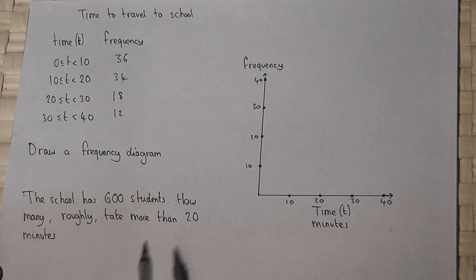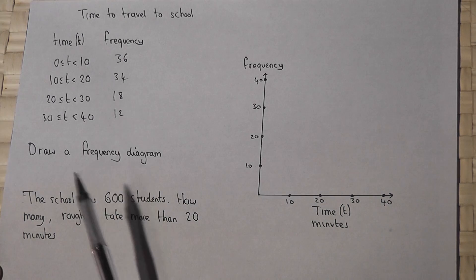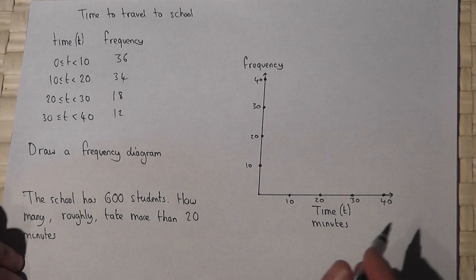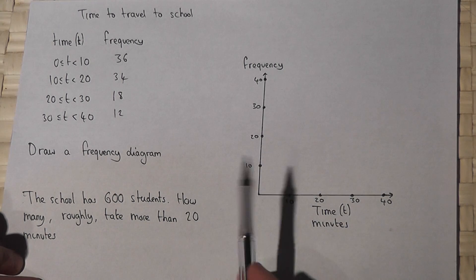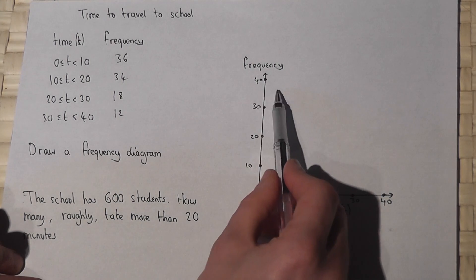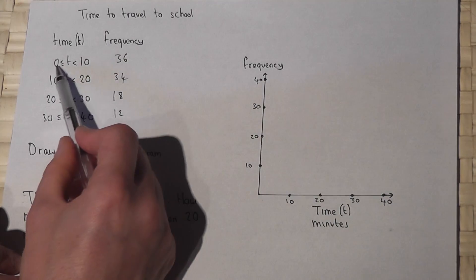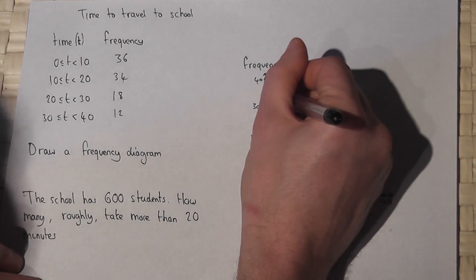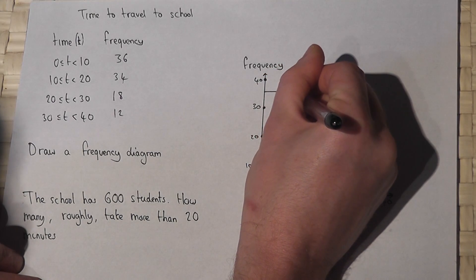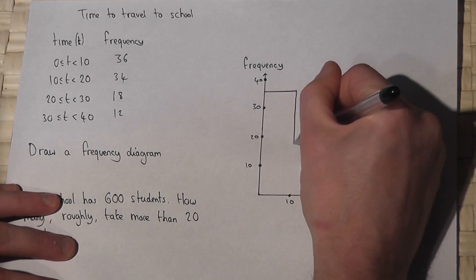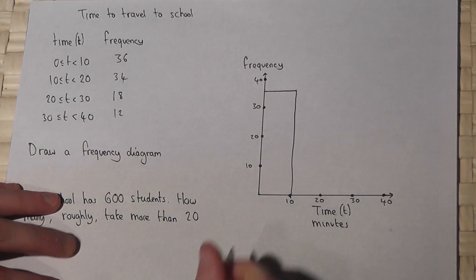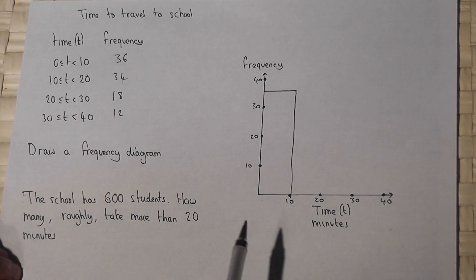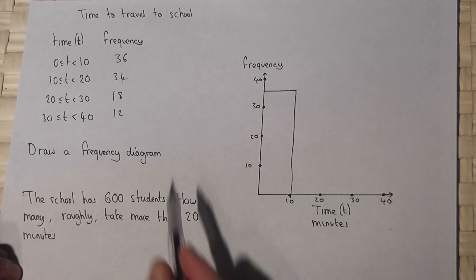A frequency diagram is basically a bar graph. Between 0 and 10 minutes there were 36 people, so I draw a bar which goes up to 36 on the y-axis between 0 and 10. This is where graph paper normally comes in, but it's roughly about here — so 36, a big bar between 0 and 10. The height represents the frequency. Between 10 and 20 minutes there were 34 people.